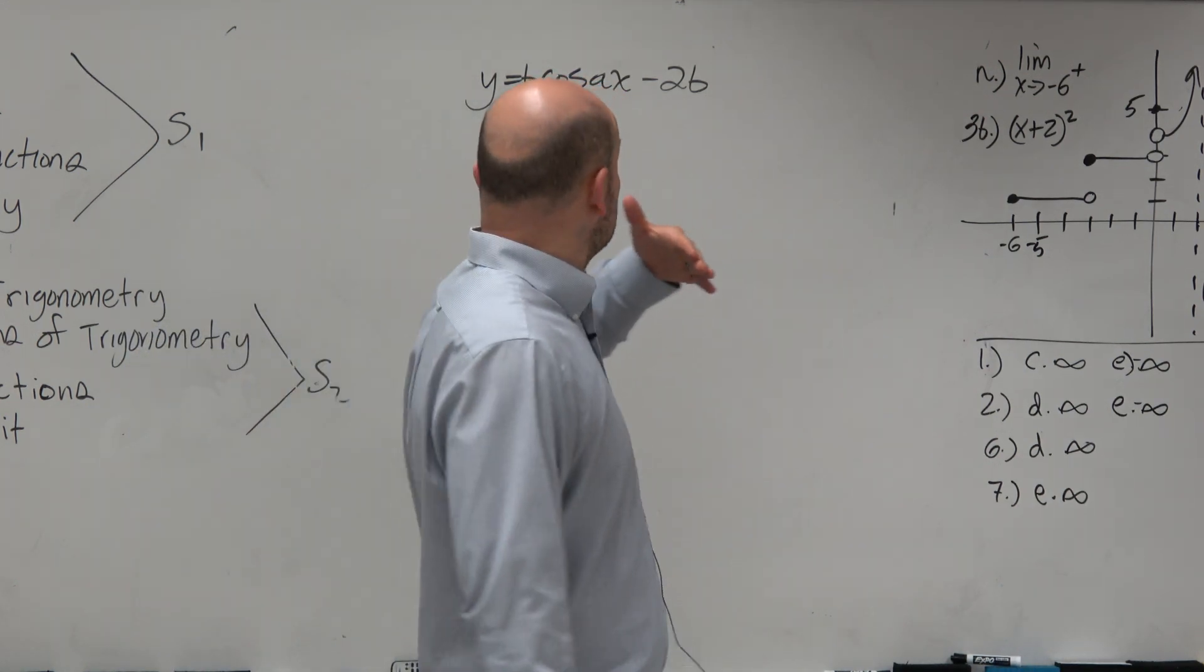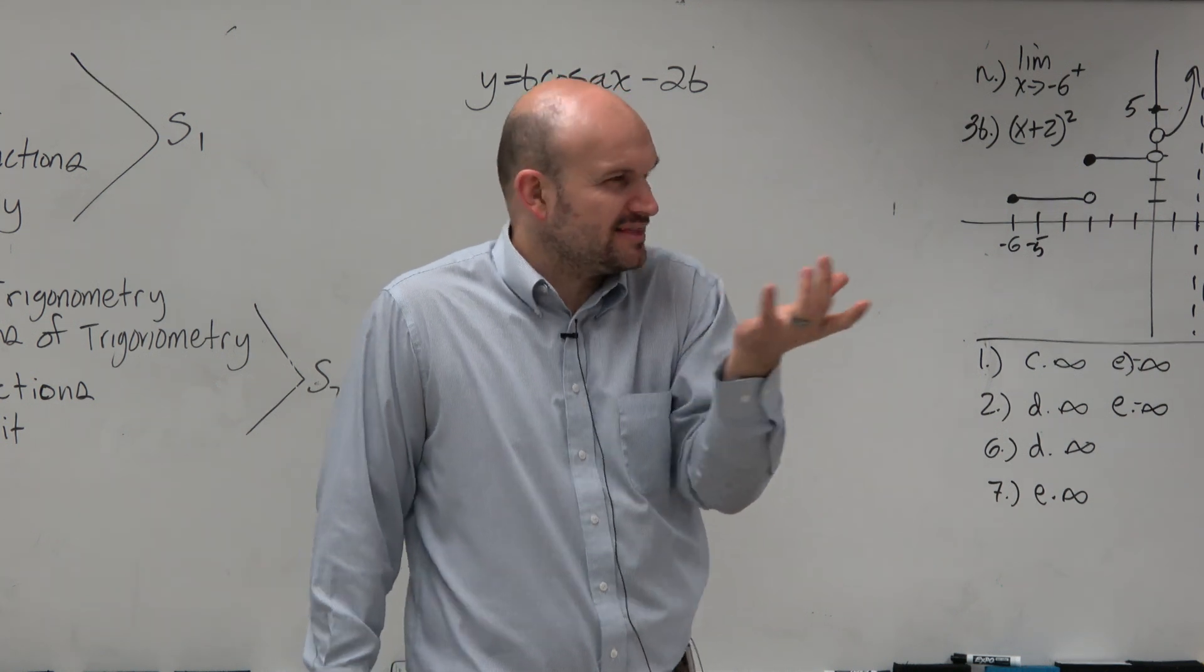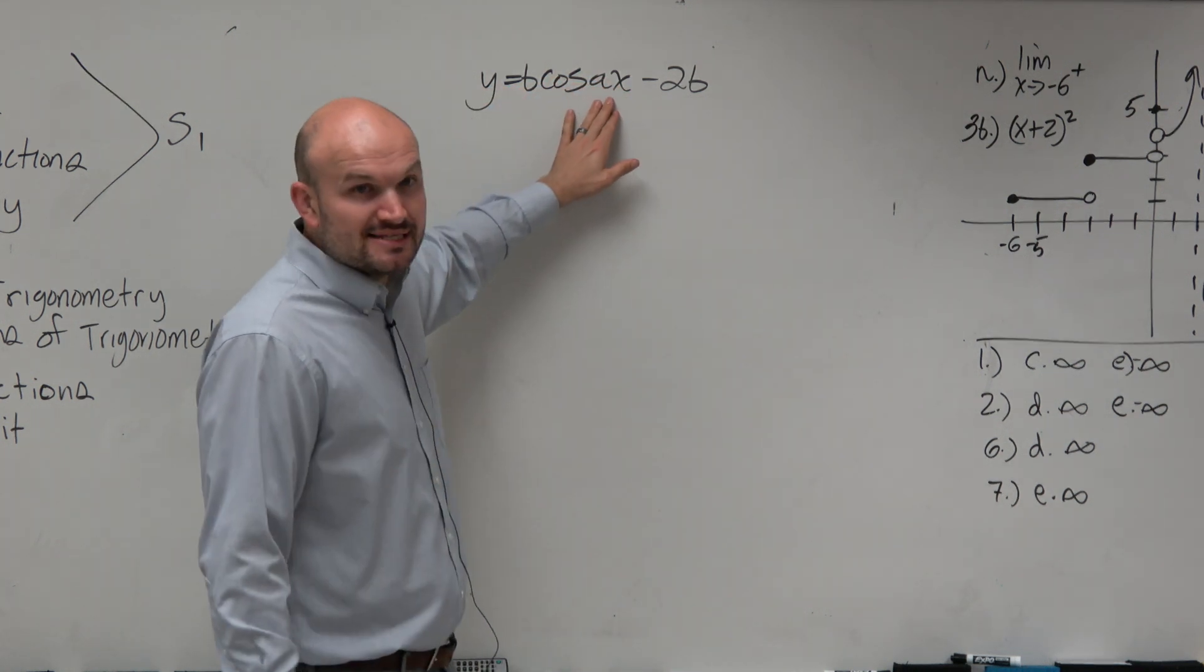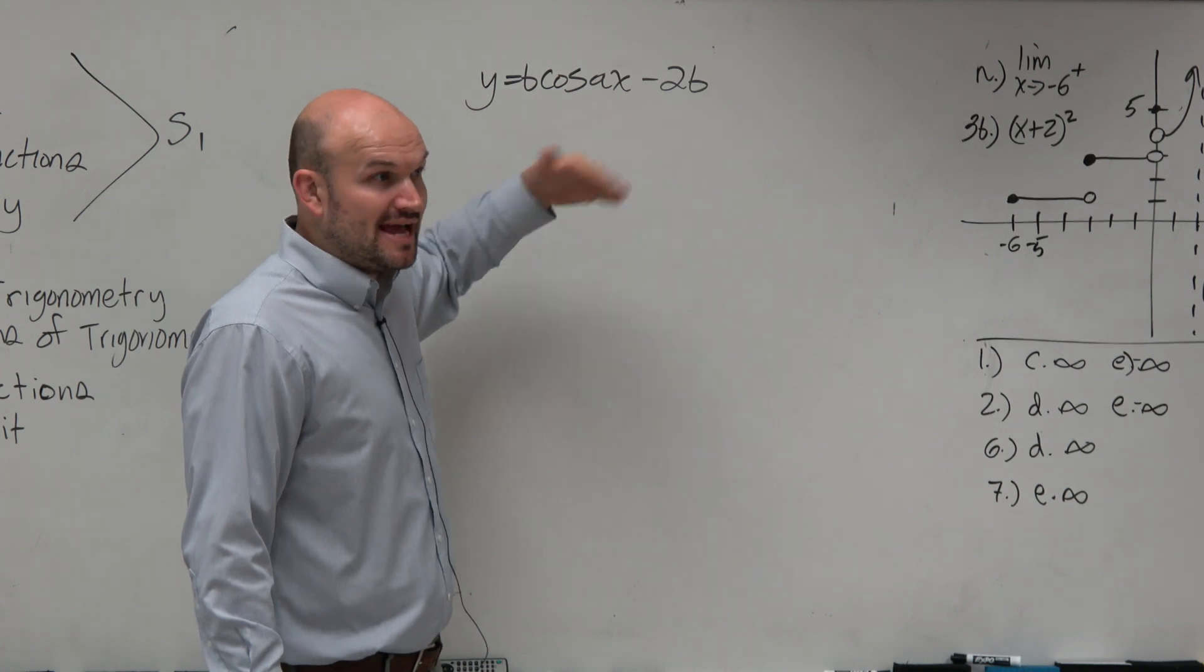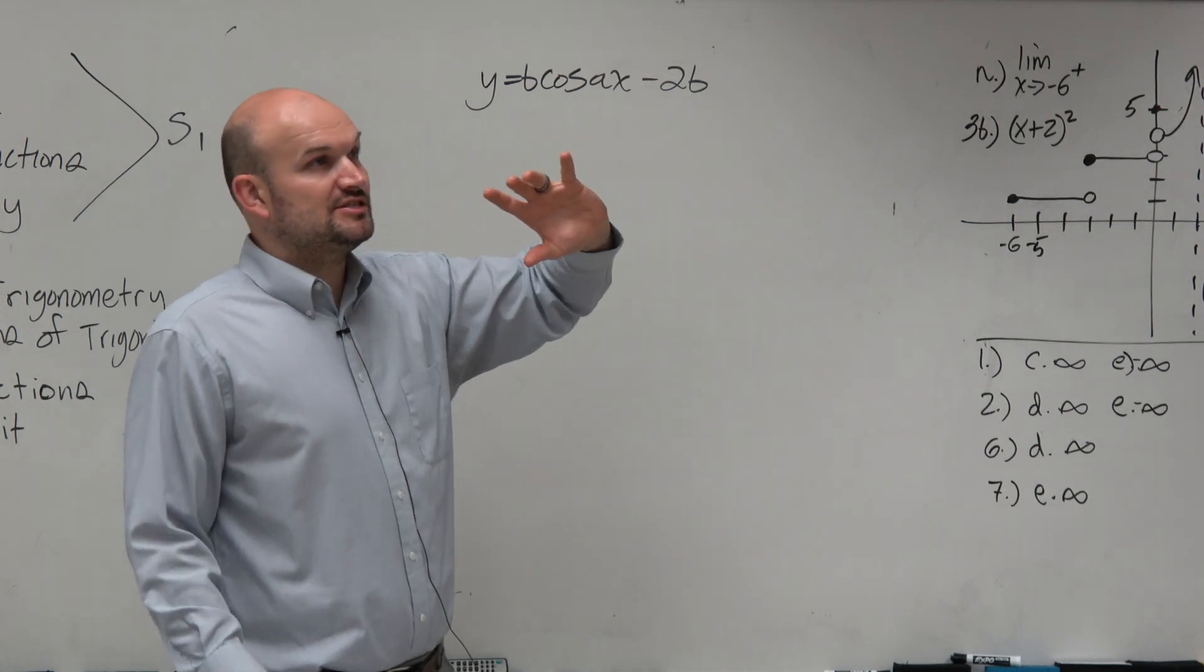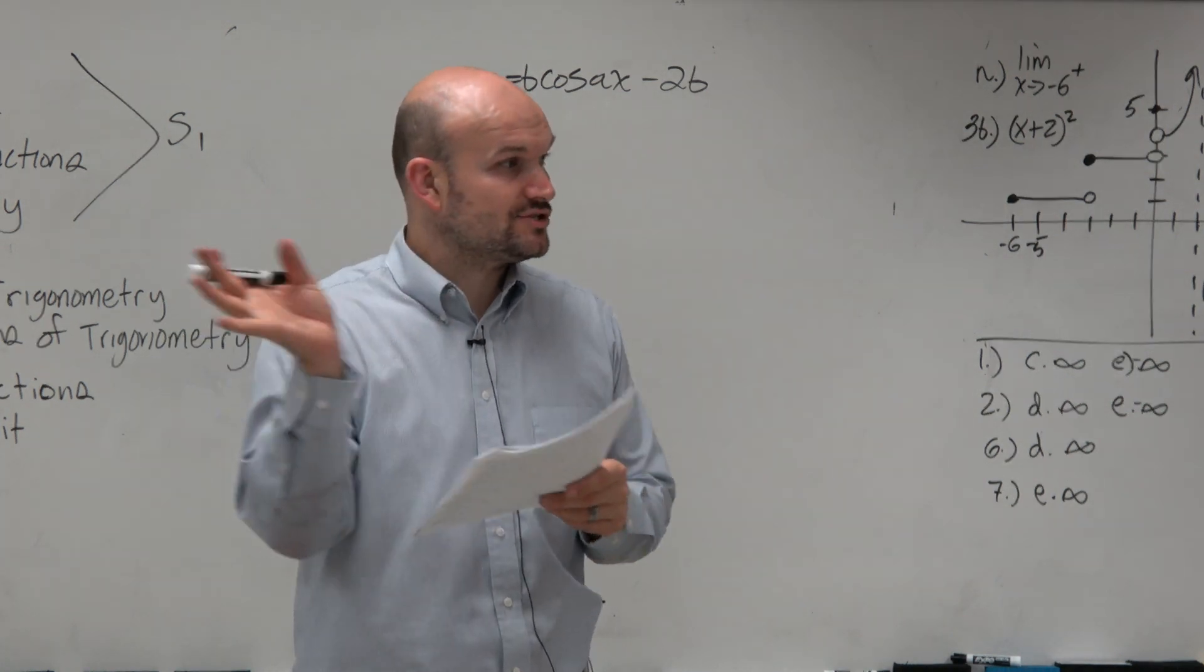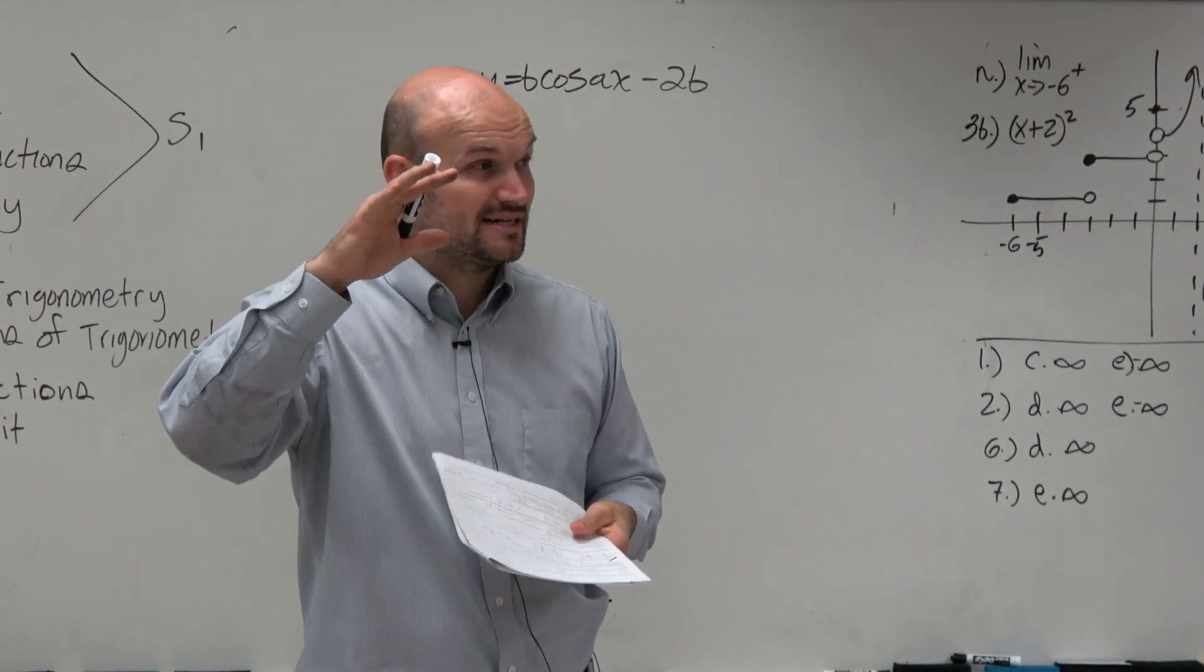So a is going to be impacting horizontally. That's inside of the function. They didn't have parentheses, but you can see that a is going to be inside of the function. So a is going to be a reflection, stretch, or compression. But that does not impact - that's a horizontal stretch or compression. That does not impact the range at all.